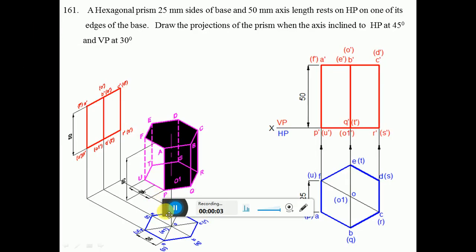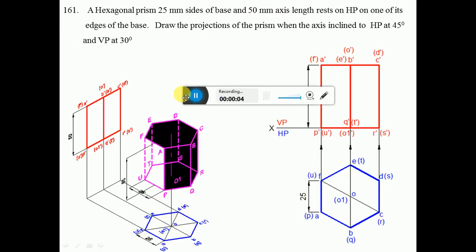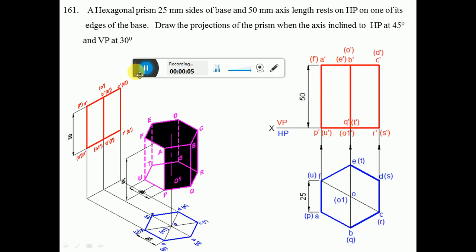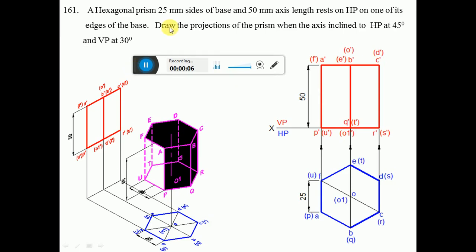A hexagonal prism of 25 mm sides of base and 50 mm axis length rests on HP on one of the edges of the base. Draw the projections of the prism when the axis is inclined to HP at 25 degrees and VP at 30 degrees. This is the problem given.